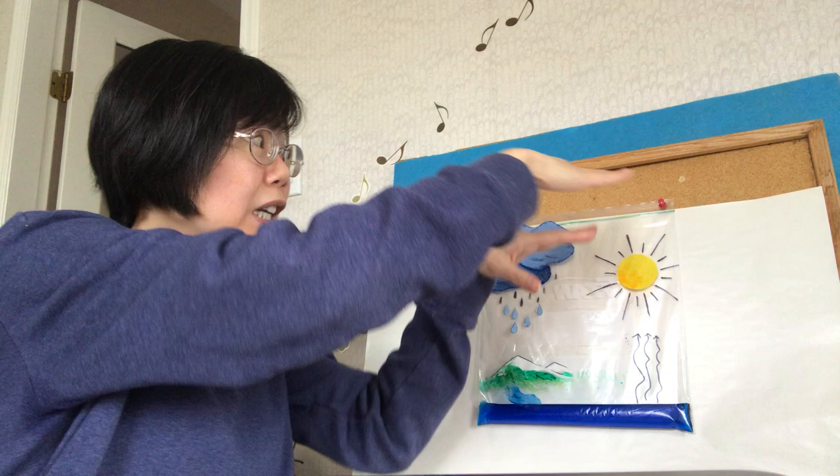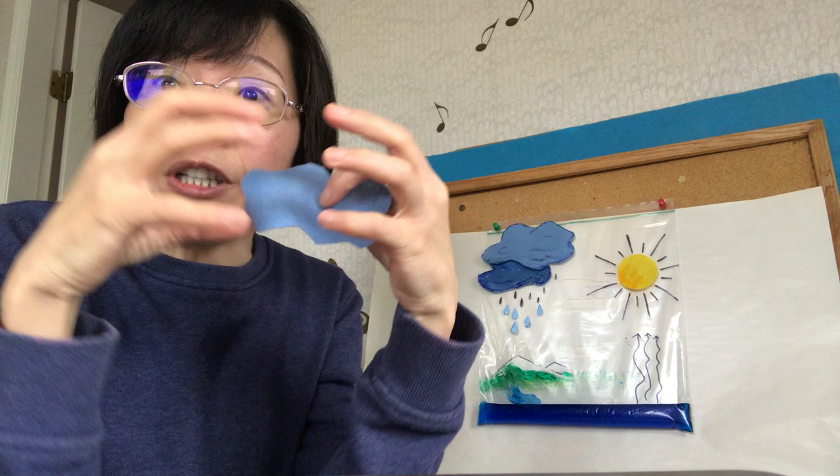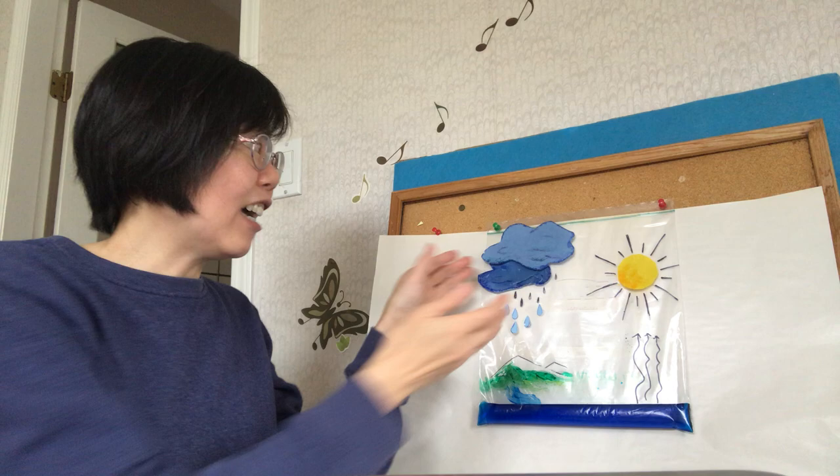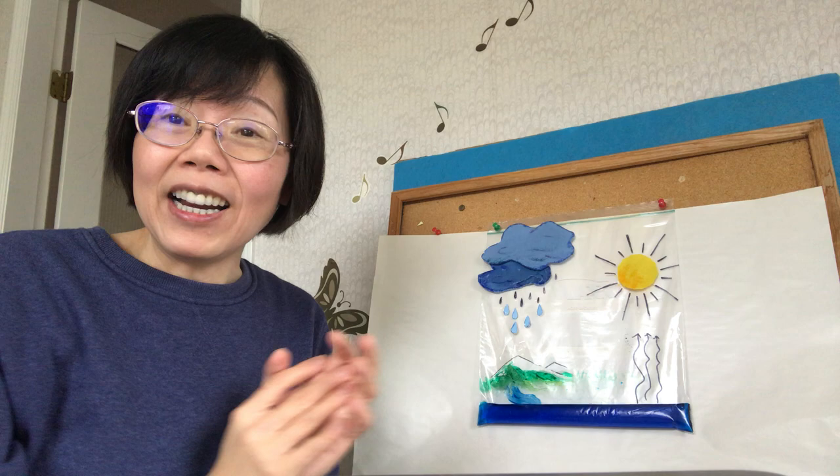So when the vapor hits the cold temperature, because up in the air the temperature is really low, they condense together. So they form a cloud again. And the cloud gets bigger and bigger and heavier. They have water drops. So we call this precipitation.